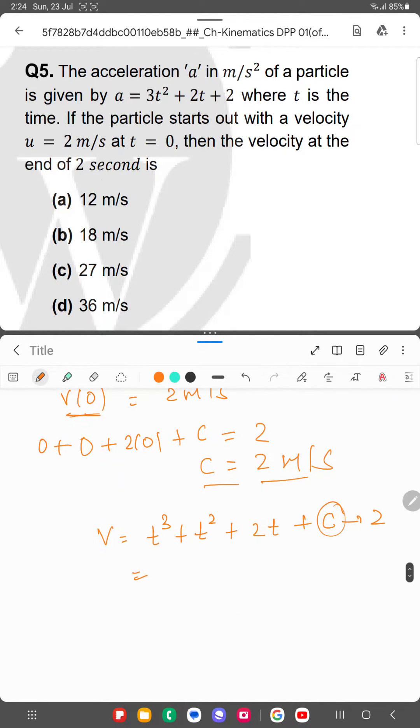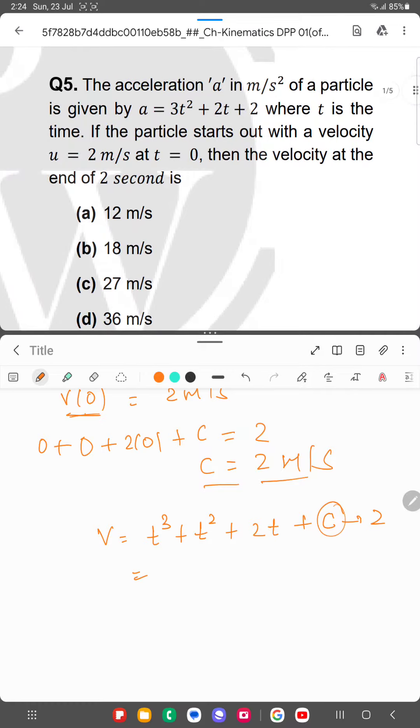Now we have to find the velocity at 2 seconds. So 2³ + 2² + 2(2) + 2 = 8 + 4 + 4 + 2 = 18 m/s.